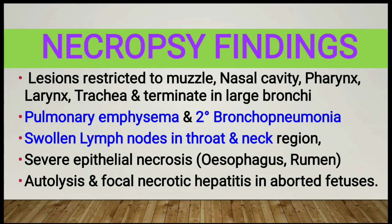On post-mortem, lesions are found restricted to the nasal cavity, pharynx, larynx, trachea, and terminate in large bronchi. Pulmonary emphysema and secondary bronchopneumonia can also be noted. Swollen lymph nodes in throat and neck regions mainly, severe epithelial necrosis of the esophagus and rumen, and autolysis with focal necrotic hepatitis in the aborted fetus can be noted.